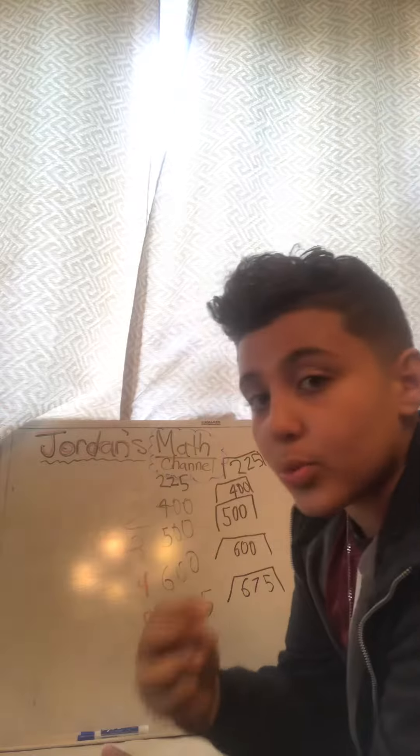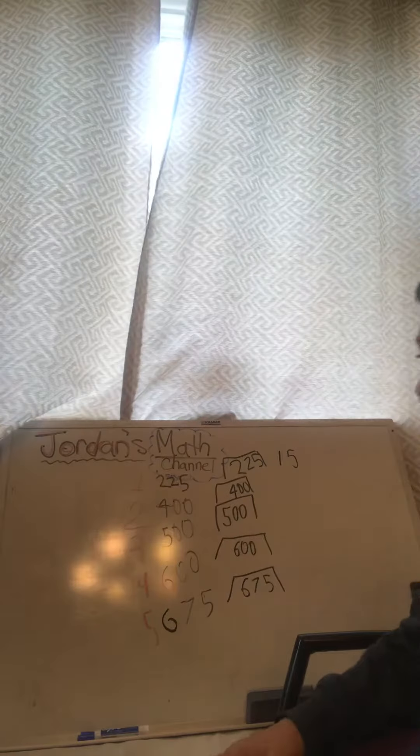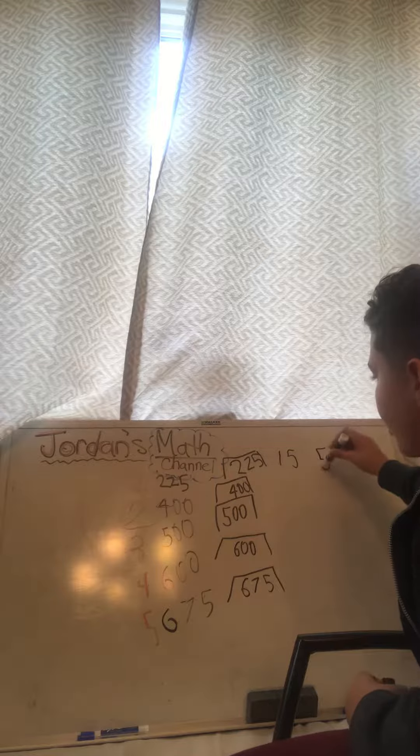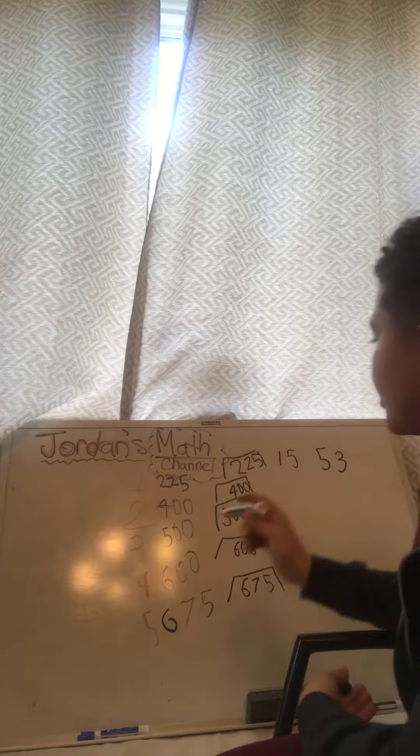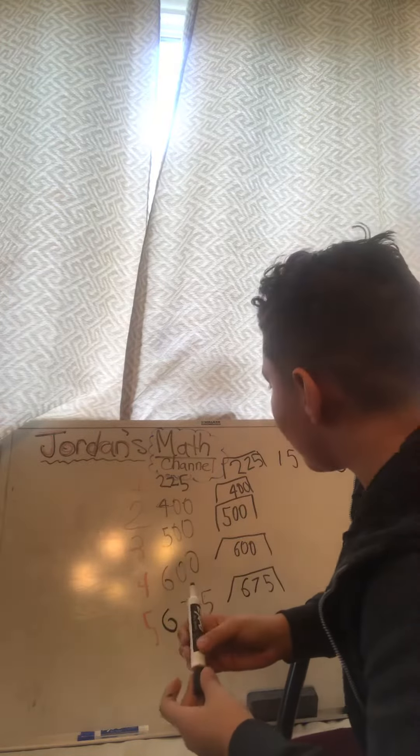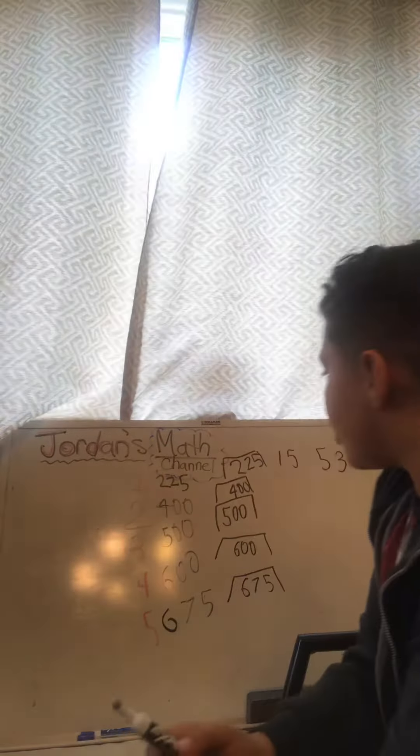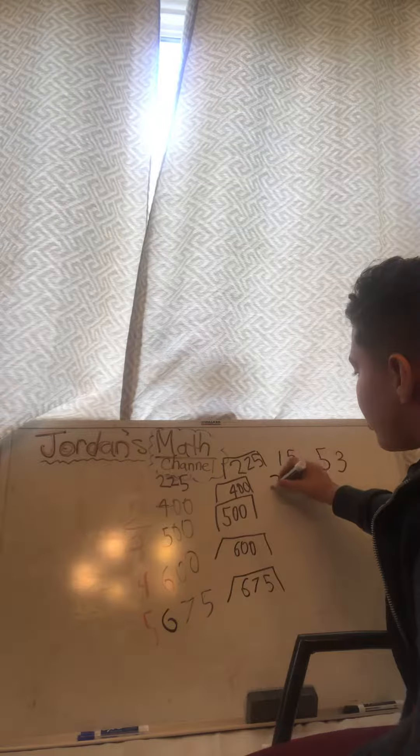All right, now we're down here. 400 divided by something equals that. Alright, we could do this in different ways. We could do 200, we could do 2, we could do 4, we could do 100.